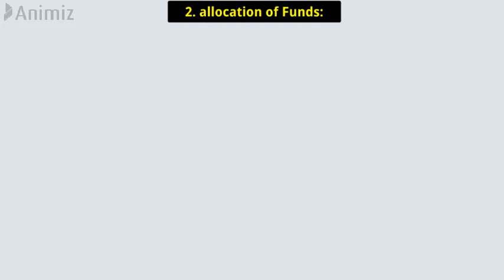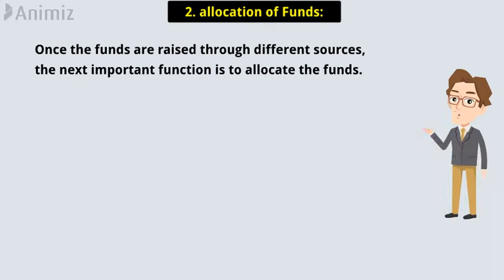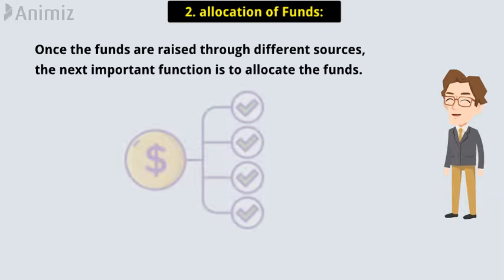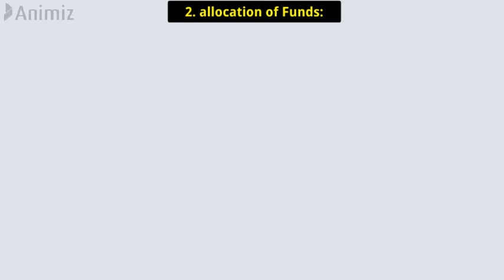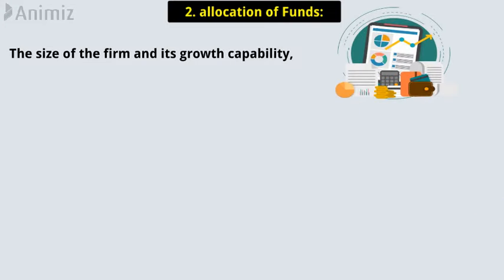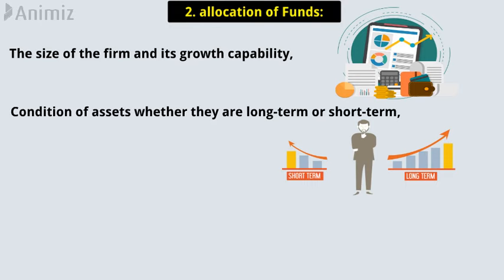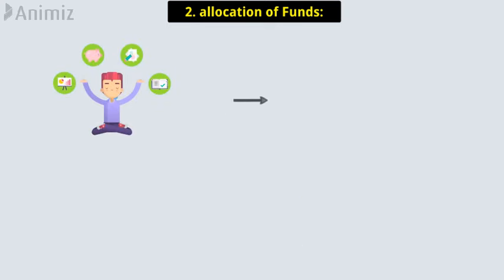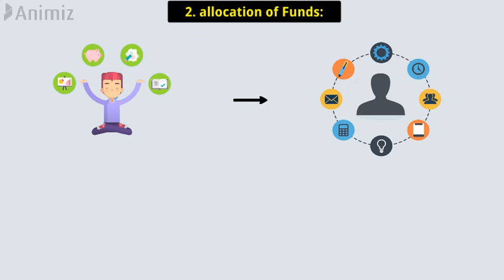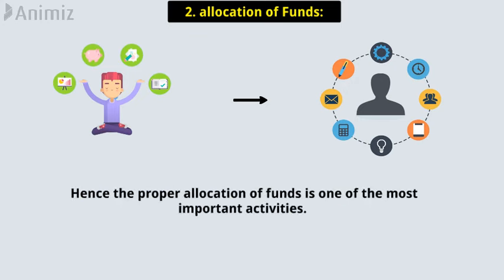Second: Allocation of Funds. Once the funds are raised through different sources, the next important function is to allocate the funds. In order to allocate funds in the best possible manner, the following points must be considered: the size of the firm and its growth capability, condition of assets whether they are long term or short term, and the method by which the funds are raised. These financial decisions directly and indirectly influence other managerial activities, hence proper allocation of funds is one of the most important activities.